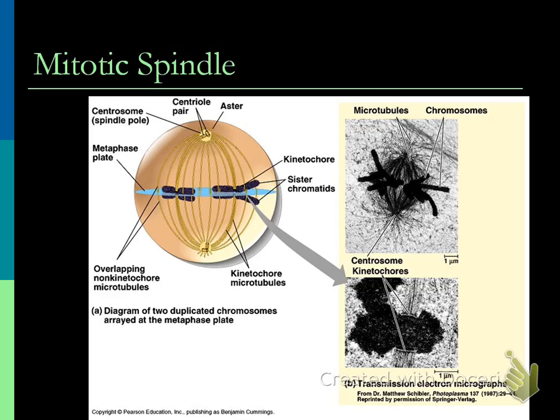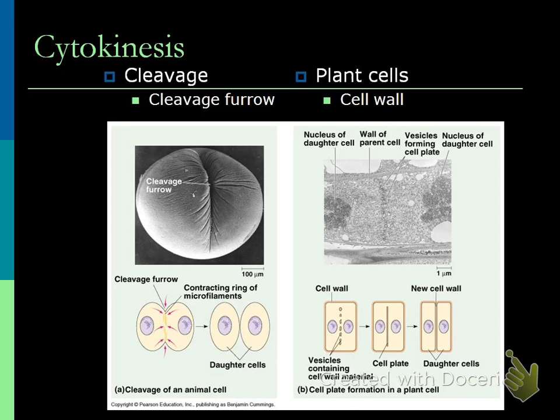Cytokinesis is where the cleavage or the cell plate forms. Also, cytokinesis is where the cytoplasm itself starts to separate. Here's a plant cell - this darkening area is the cell plate, and the cell plate forms from the middle and then starts filling itself in, going from the middle to the outside. Whereas in an animal cell, it actually cleaves in the middle, and those basically pinch off so you get daughter cells.